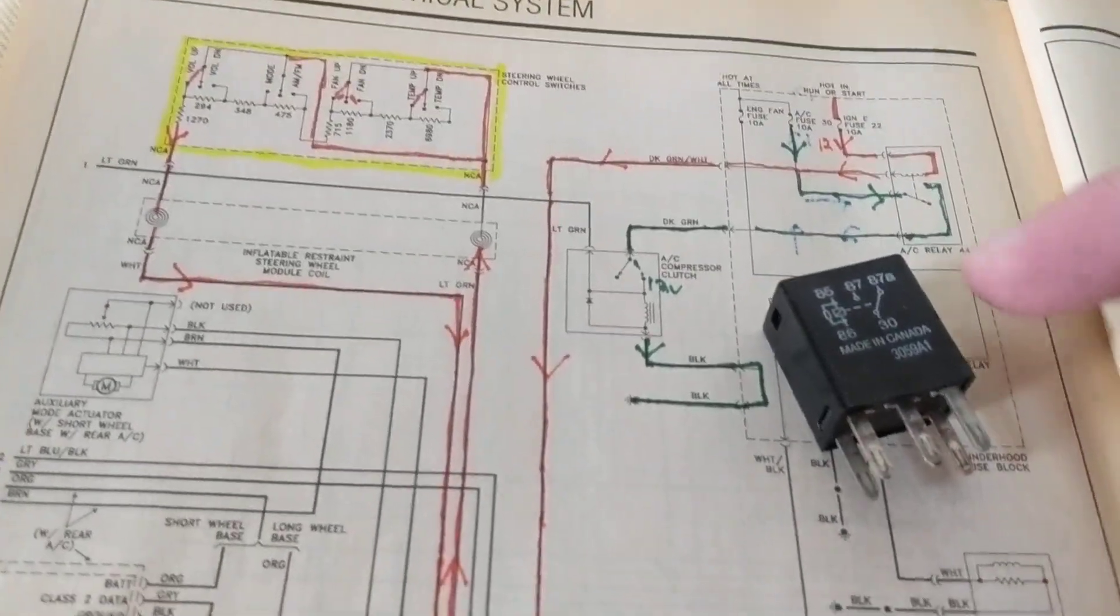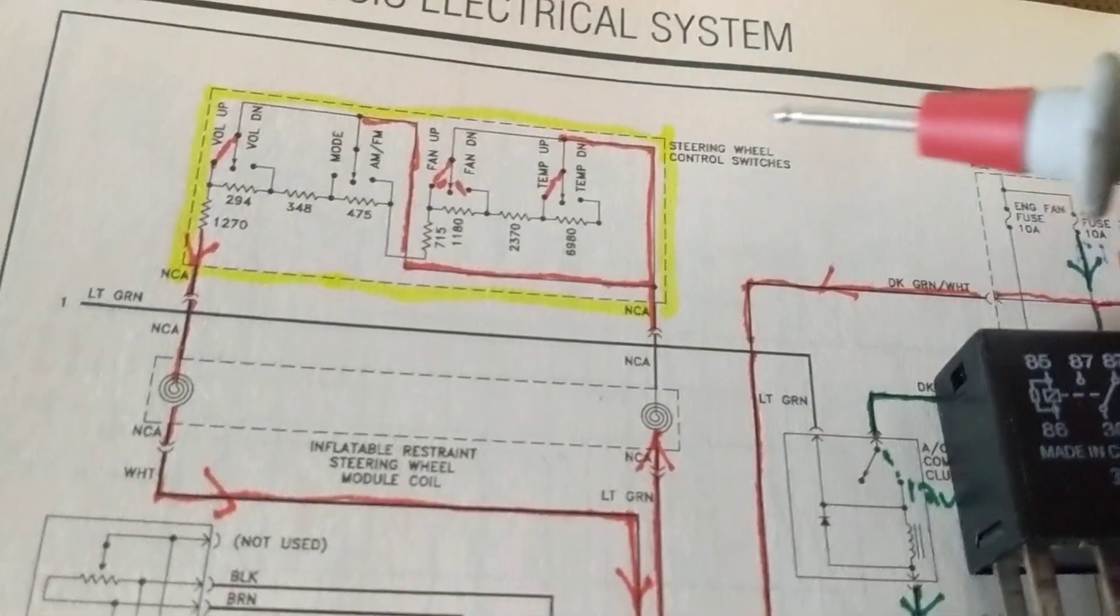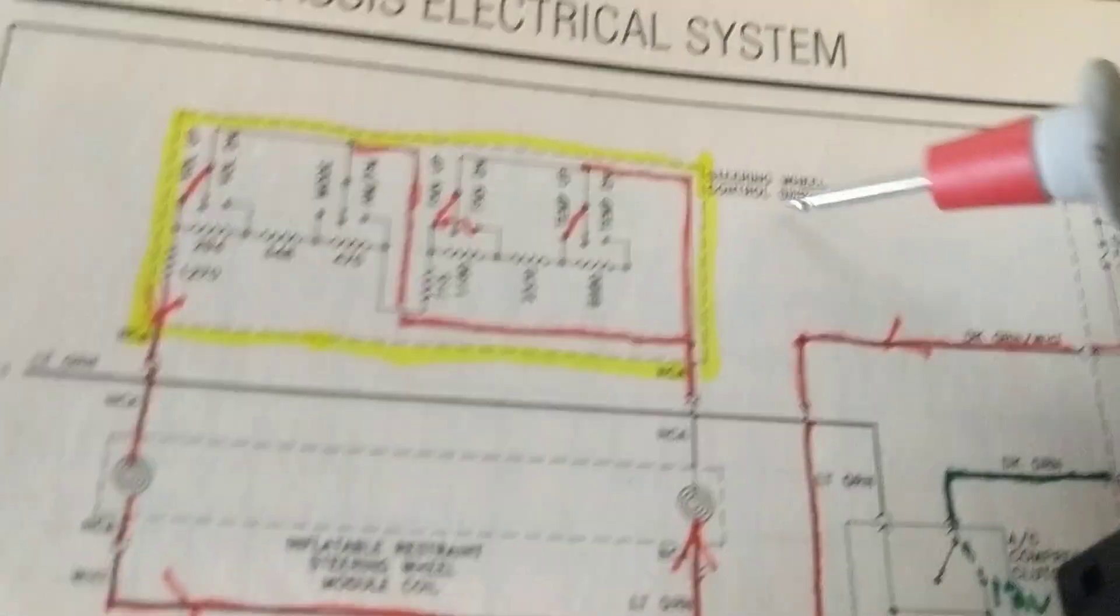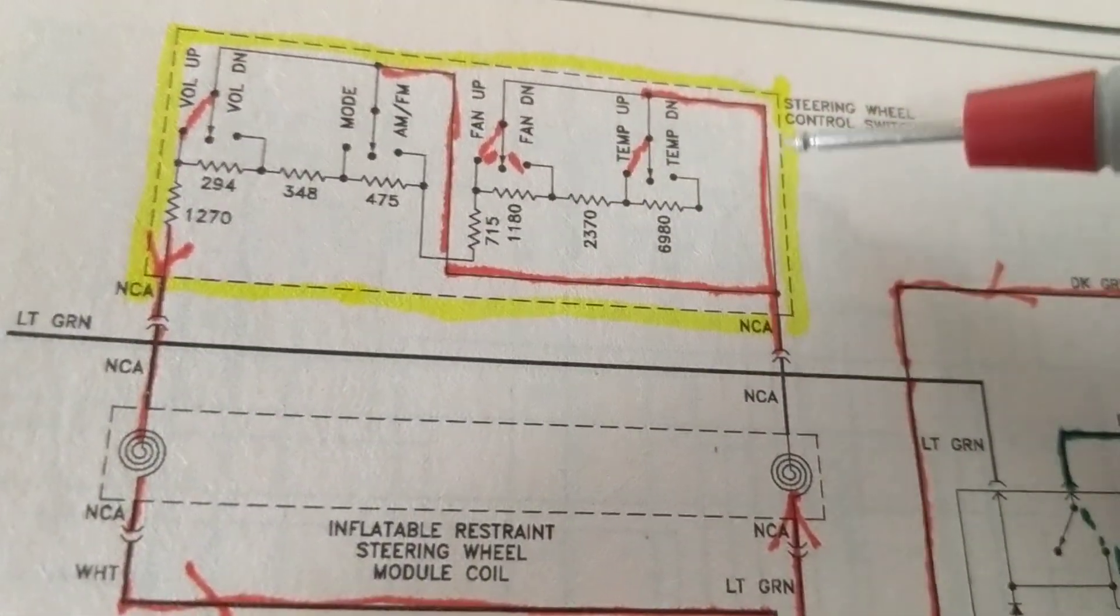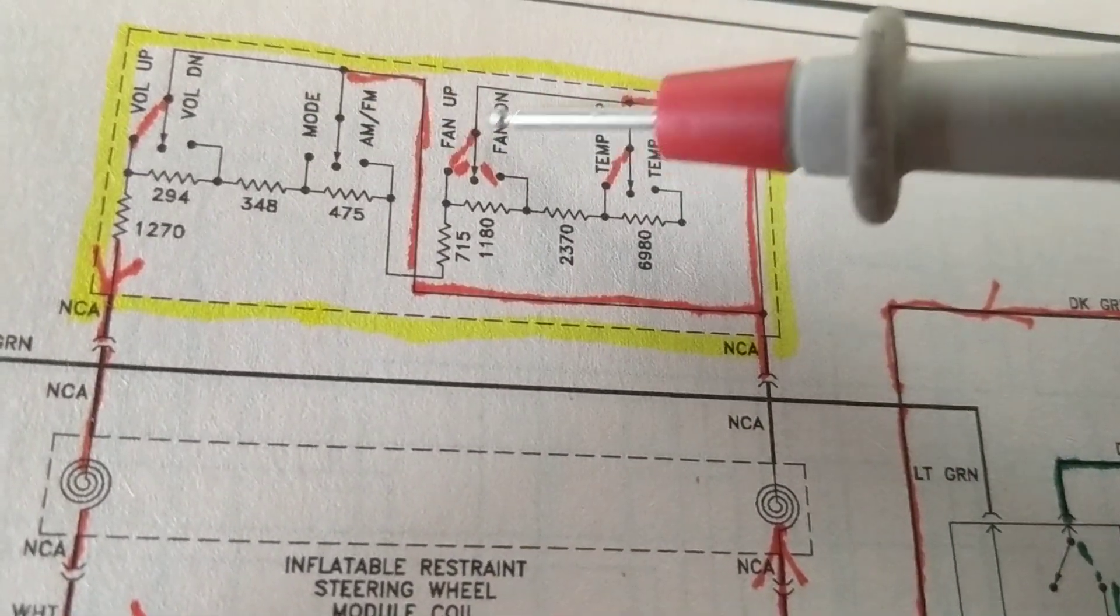Hello once again, I wanted to go over something I came across from a customer. You have these switches on the steering wheel that you can control the volume of your radio up and down. You can control the fan, you control the temperature of your car, and they are available on your steering wheel.